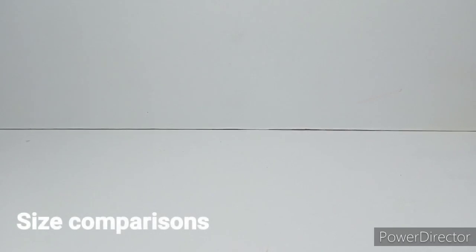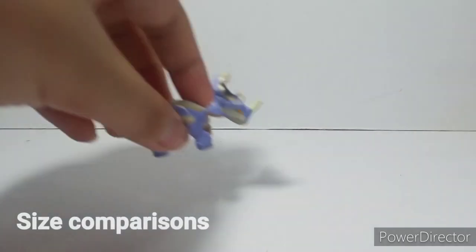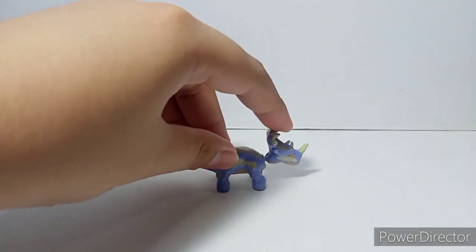So now that we're done with the 360 view, let's move on to the size comparisons with the Sinoceratops. Starting off with the raptor, this is a Blue figure. It's clear that this is bigger and also longer.